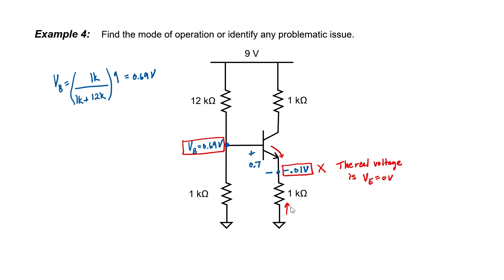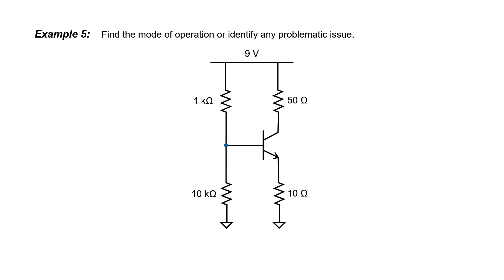The real voltage at the emitter is 0. We don't indeed have a forward biased junction here — the transistor can't turn on. No current subsequently flows down through the 1 kilo ohm resistor and no current flows up either. Because the current flowing from the power supply through this resistor is 0, I know that the collector voltage has to be 9 volts. To conclude, this transistor is in the cutoff mode.